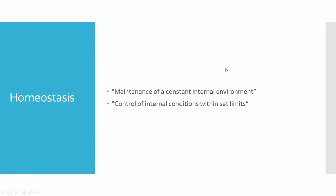In terms of homeostasis, the definition is the maintenance of a constant internal environment — essentially the control of internal conditions within set limits. For example, if it gets really cold outside, we can't let our body temperature drop to match it. If you're out in the snow, our body can't be at zero degrees because our enzymes and bodily functions wouldn't work at that temperature.